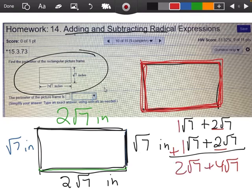And now I can go ahead and add these together, 2 and 4, or 6, I'm sorry, square root of 7. And again, my units here are going to be inches.